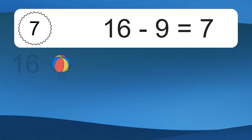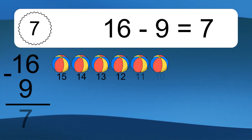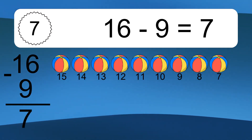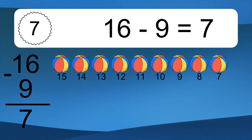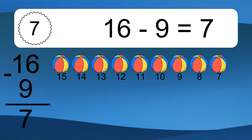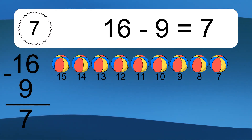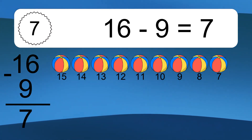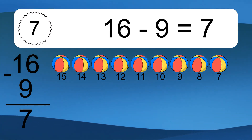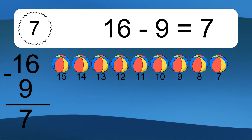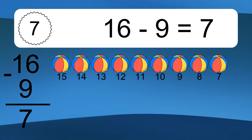16 minus 9 equals what? 16 minus 9 equals 7. Let's count it. 15, 14, 13, 12, 11, 10, 9, 8, 7.